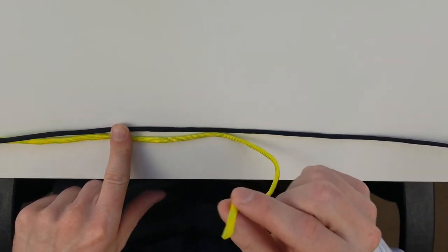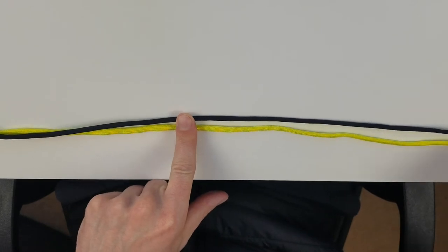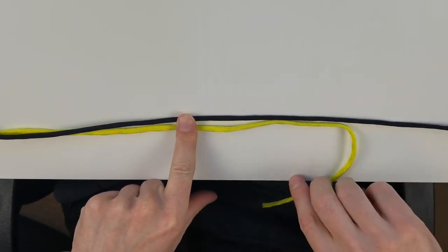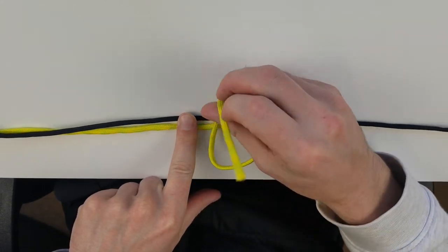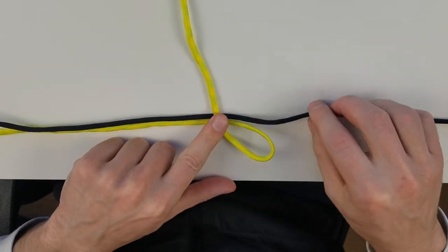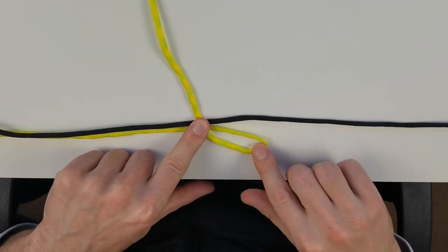We're going to take the monofilament and loop it back, just like that. We're going to cross it over the two strands of line so we have a loop and then our line. It should look just like that.